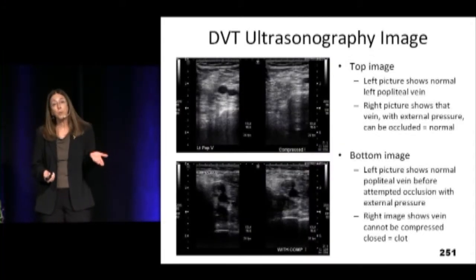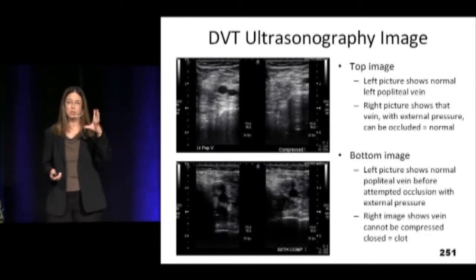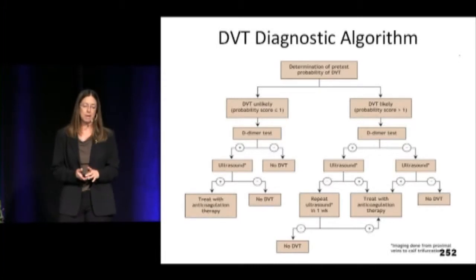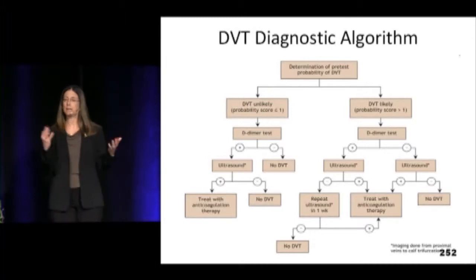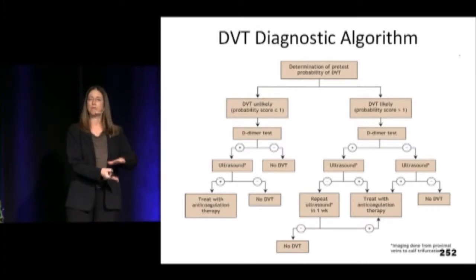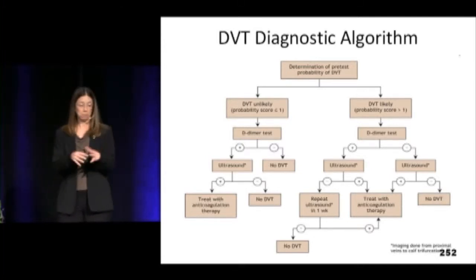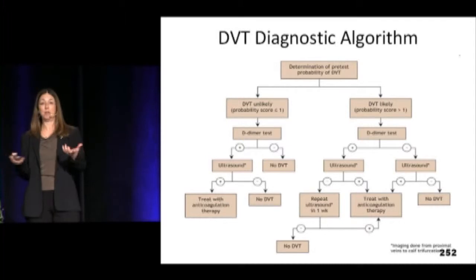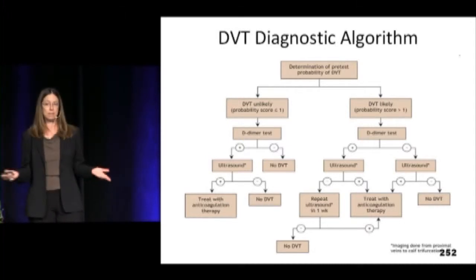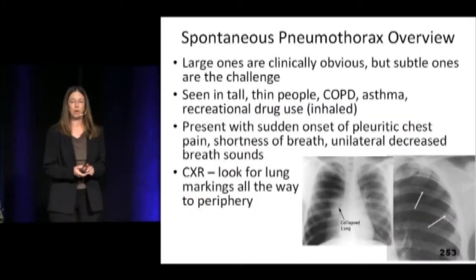Here's what the ultrasound looks like — they're looking at the vessels, pushing down, having patients take breaths, and looking at what happens to the waveform: basically looking at compressibility. For the DVT diagnostic algorithm: risk stratify first. Low likelihood — get a D-dimer. Negative, you're done. Positive — get an ultrasound. High likelihood of DVT — just go right to the ultrasound study. Don't need the D-dimer if it's high likelihood. Very simple.